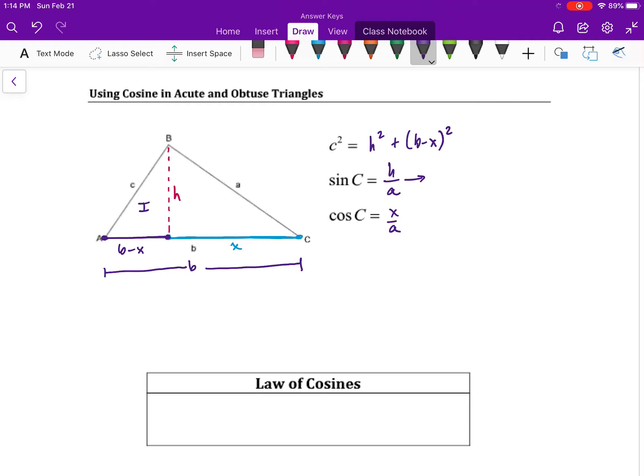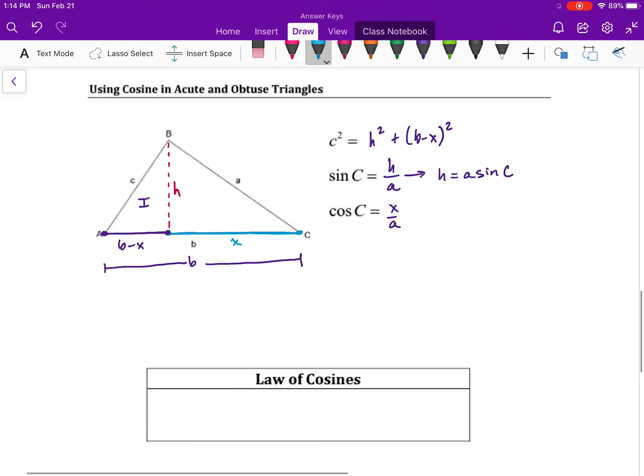I'm going to take sine of C's equation, isolate the H and rewrite this as H is equal to A sine of C. And the reason we're going to do that is because that will allow us to substitute an expression back into that original equation for H, putting it back into terms of angle measurements and side lengths on the original triangle.